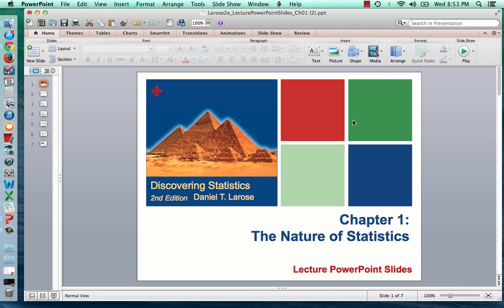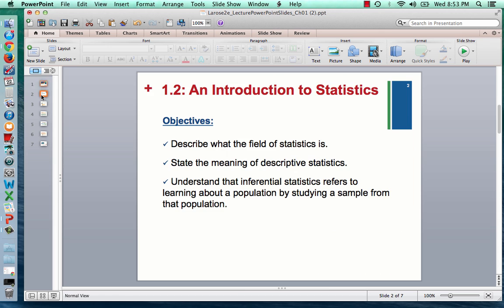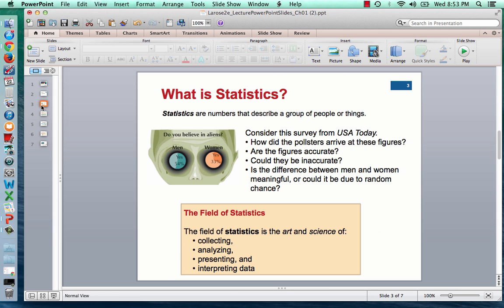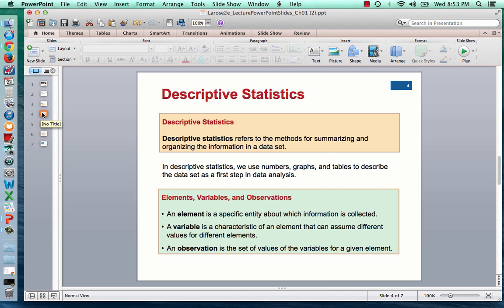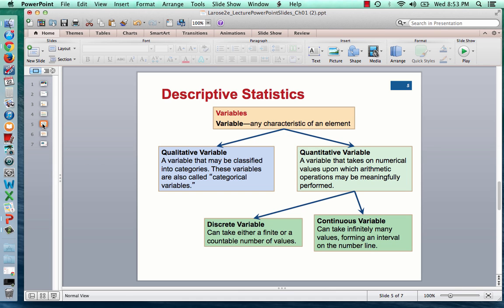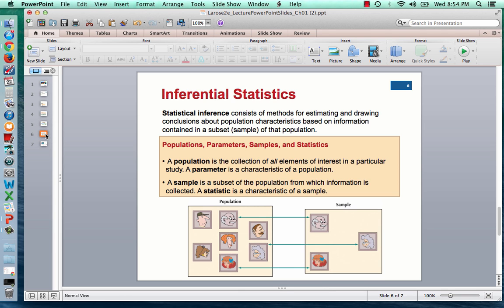To summarize, I want you to remember the main things from this: I want you to remember what an element, a variable, and observation are. I want you to know the difference between qualitative and quantitative variables. That's really important. And then the difference between a population, a sample, a parameter, and a statistic. All those things are going to come through through the rest of the course. So good luck, and we'll see you next time. Thank you.